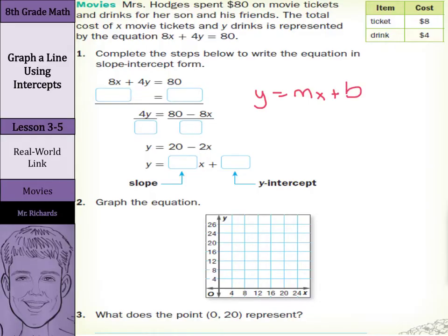So we need to work on getting this y alone. So we'll subtract the 8x from both sides. And we end up with 4y equals 80 minus 8x. Now we still need to get this y alone, so we can divide by 4 on both sides.